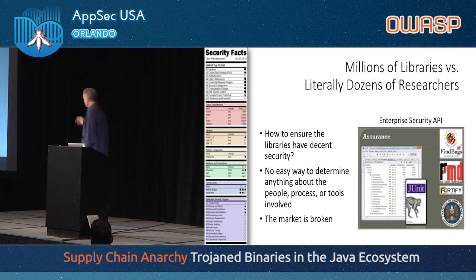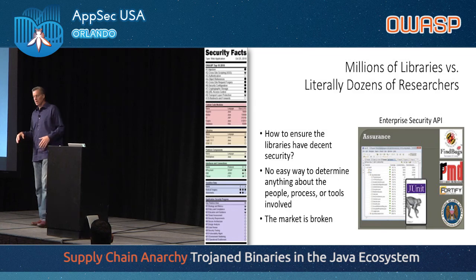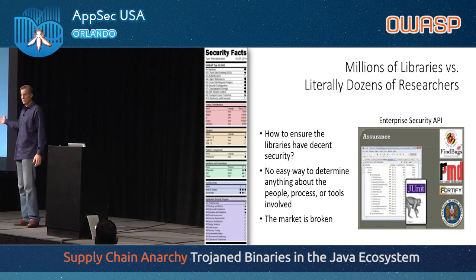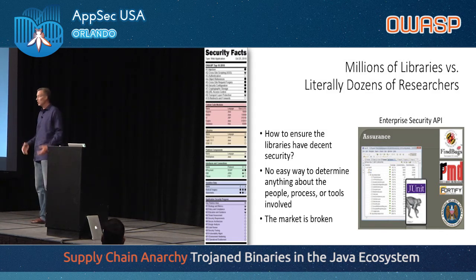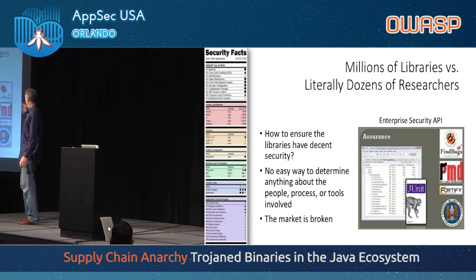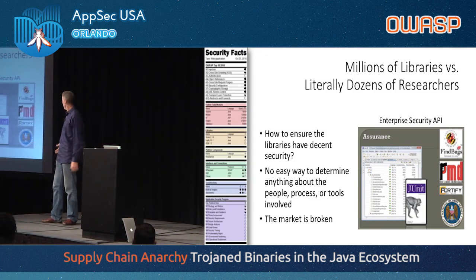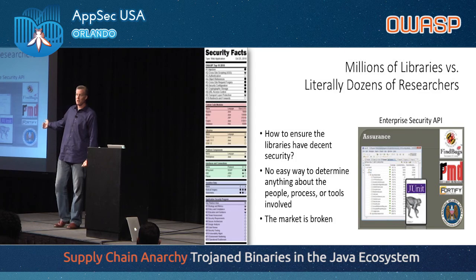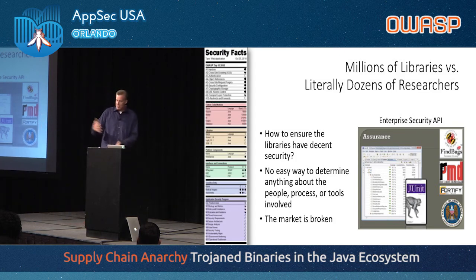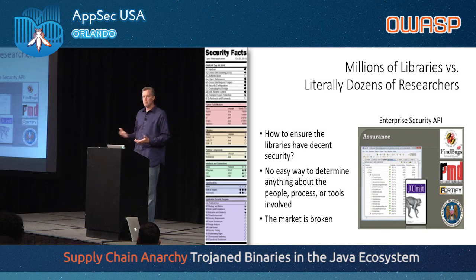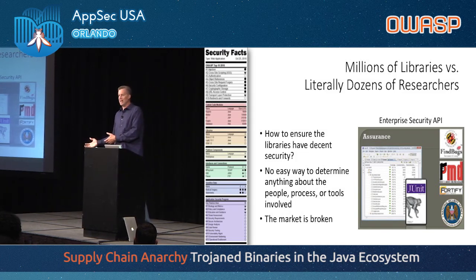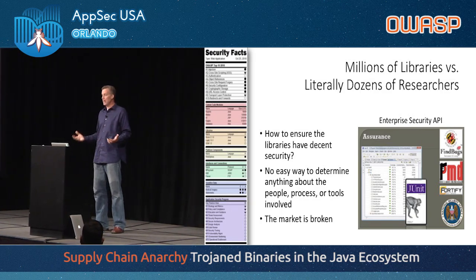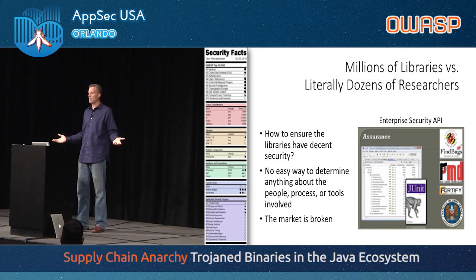When I worked on the ESAPI project at OWASP, we did things to establish assurance: we wrote a huge test suite with thousands of test cases, ran FindBugs, PMD, and other static analysis tools, and got a code review from the NSA and Lockheed Martin. We made all that evidence public, but there's no market for it — nobody knows to check. There's no ability to compare libraries, and that's something deeply broken in our software supply chain — we can't tell quality parts from non-quality parts.